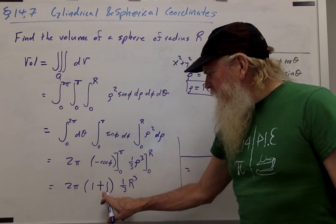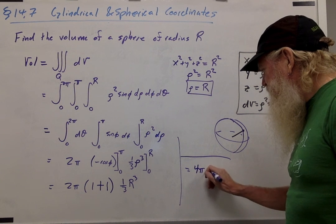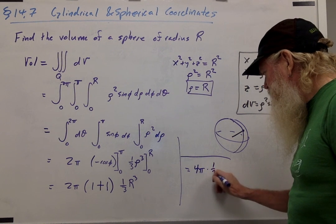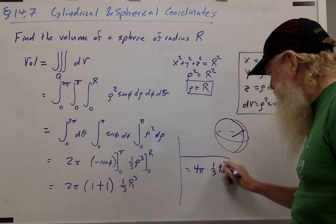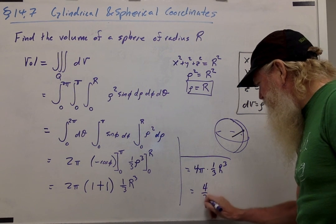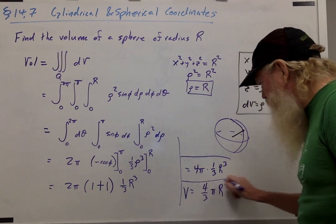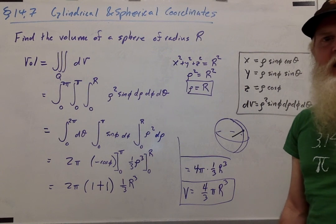So 1 plus 1 is 2 times 2 pi is 4 pi times 1 third R cubed, which gives me 4 thirds pi R cubed, which is indeed what we remember as the volume of the sphere of radius R.